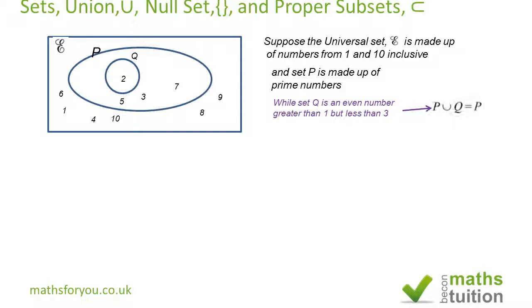So we can say that P union Q equals P. That's because if we combine what's in Q with what's in set P, we still get what's in set P. We have 2, 5, 3, 7 - we cannot repeat elements, so it's still 2, 5, 3, 7. P union Q is also P.